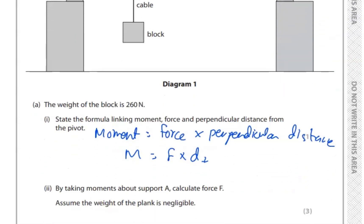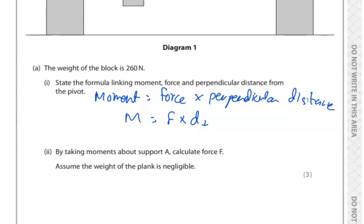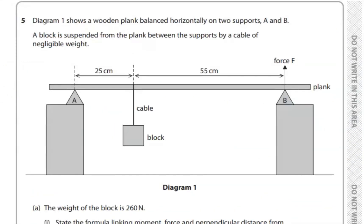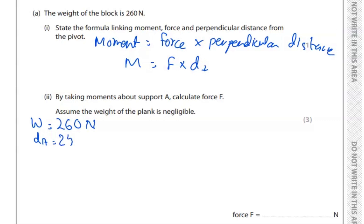In the next part, they are asking: by taking moments about support A, calculate the force. Assume the weight of the plank is negligible. First, let's note the given data: the weight of the block is 260 newtons. We need the distance from A. The distance supported by the cable is 25 centimetres, which converts to 0.25 metres.